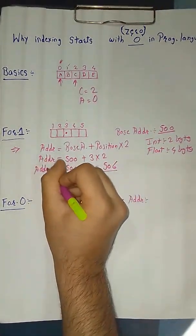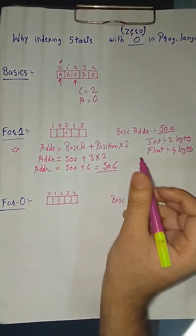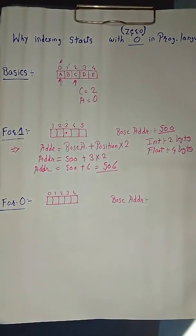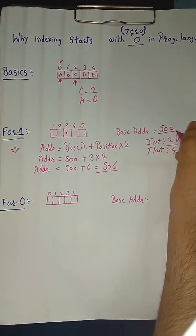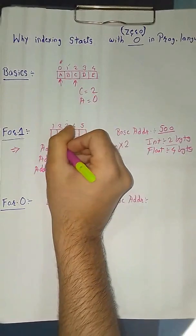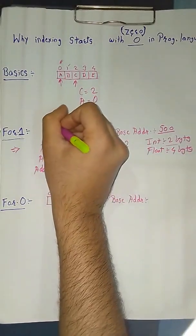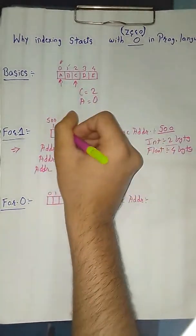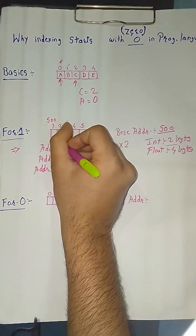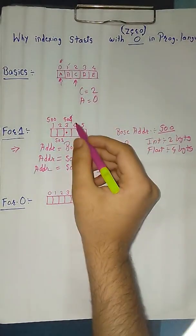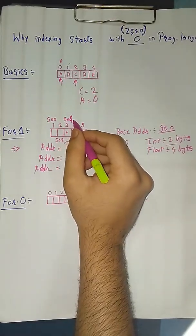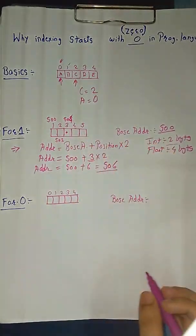By calculation, we have got the address as 506. But let's verify it from here. We all know that it is of 2 bytes and the base address is 500. So the first element address will be 500, the second element address will be 502, and third element address will be 504.